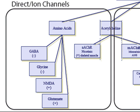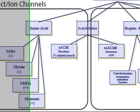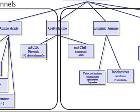Direct ion channel receptors include amino acids like GABA and glycine, which tend to have inhibitory effects — they let chloride come in or potassium leave. There's also NMDA and glutamate, which have EPSP or stimulatory effects, so they open sodium channels. Acetylcholine is a major neurotransmitter with two different types of receptors: one is a direct ion channel type, and the other responds indirectly through G-proteins. The nicotinic acetylcholine receptor receives signals from motor neurons and stimulates muscle, while the muscarinic receptor works through G-proteins and is a major receptor in the parasympathetic nervous system.